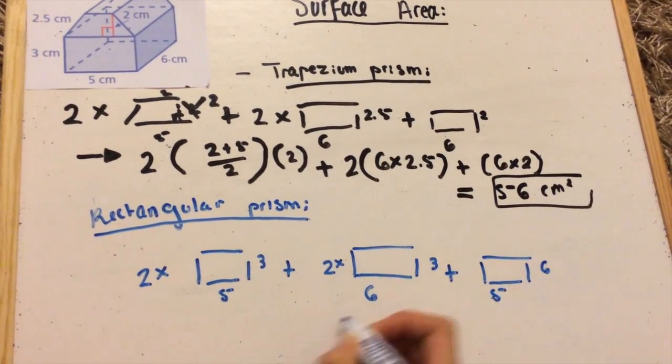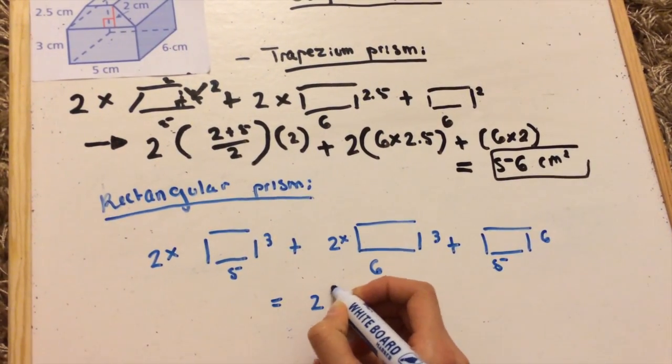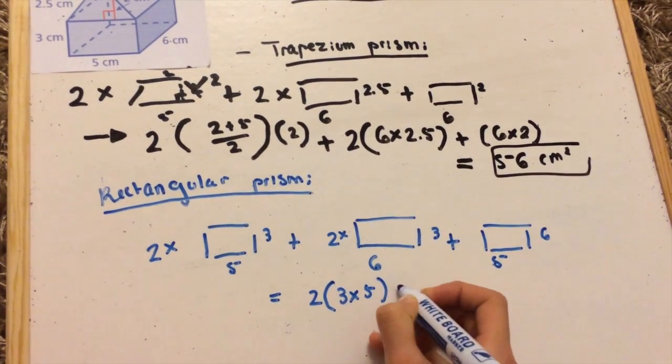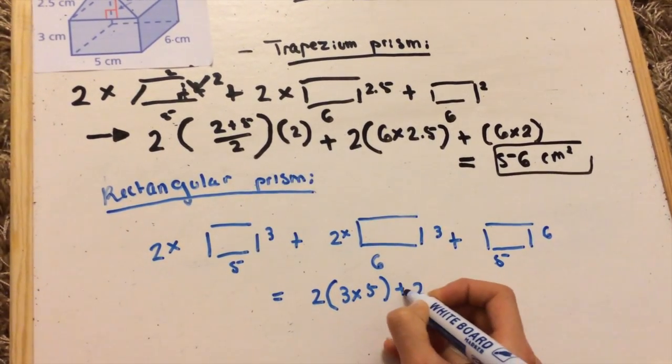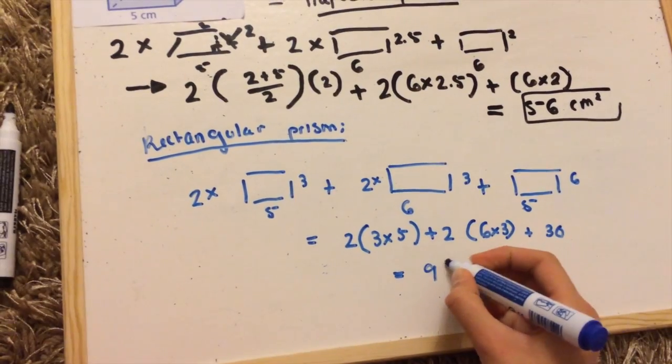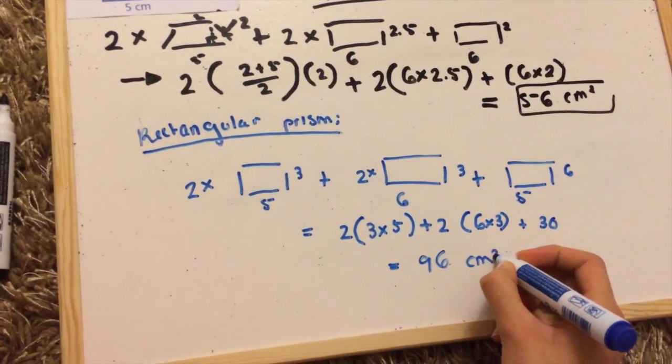So the area is found by multiplying the width by the length. That's 3 times 5, and multiply it by 2 because there's two rectangles. And then you calculate your area. The answer is 96 centimeters squared.